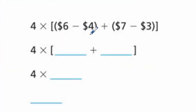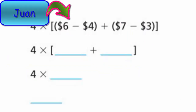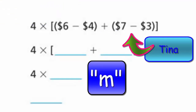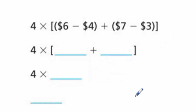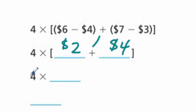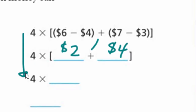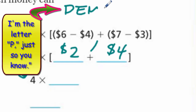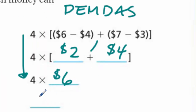The expression is written for us: [(6 - 4) + (7 - 3)] × 4. Going to the innermost parentheses first: six minus four is two dollars, and seven minus three is four dollars. Now inside the brackets we have 2 + 4, which equals six dollars. The four just keeps coming down because we have to handle the parentheses before multiplying - that's order of operations, good old PEMDAS.